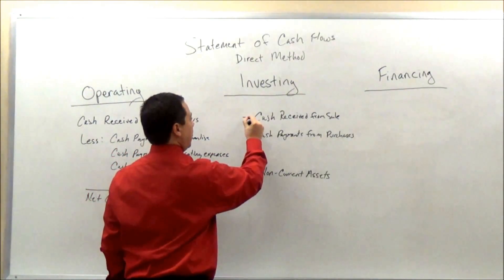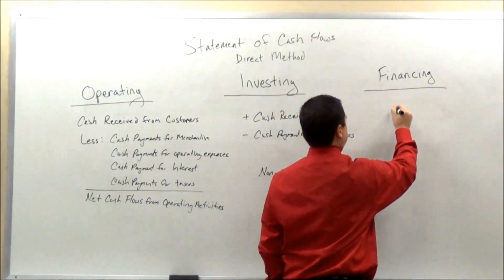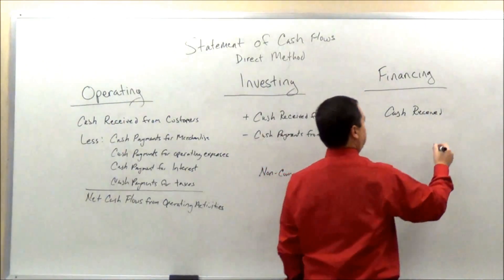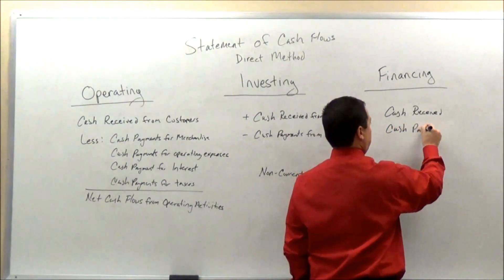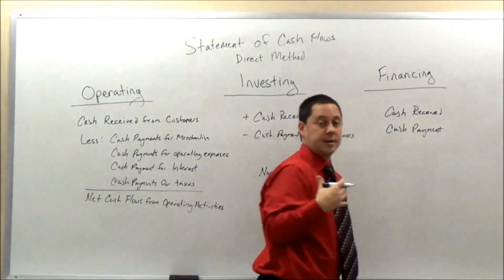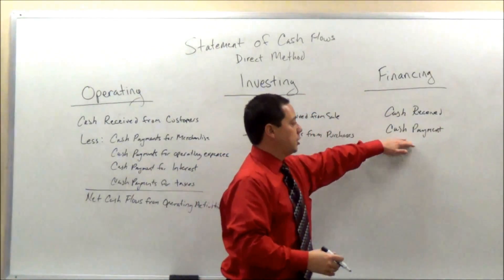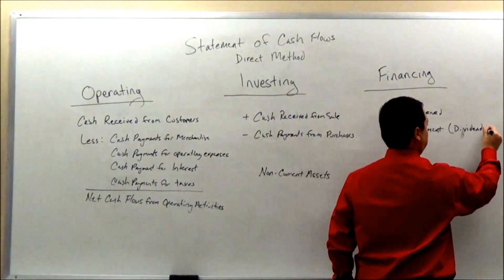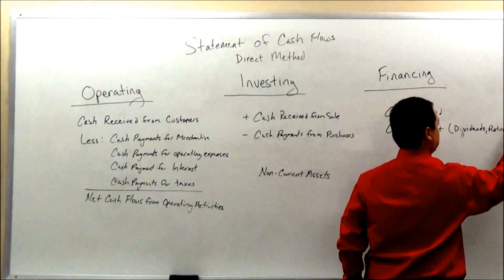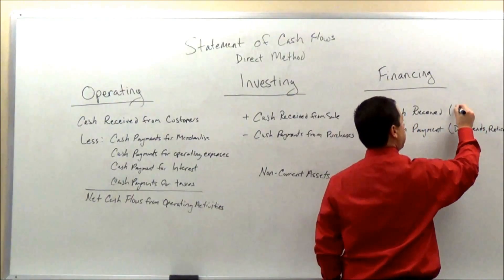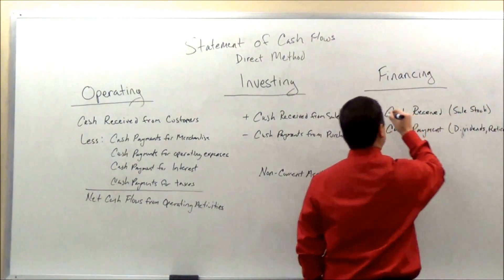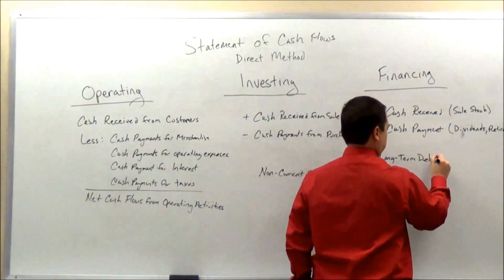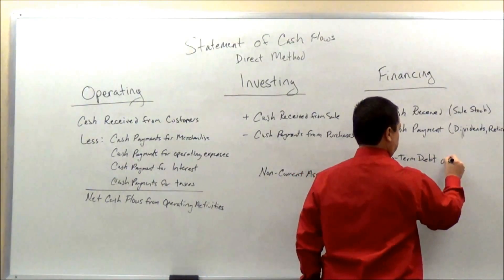We'll just add and subtract those. Now here in the financing section, it's similar. Cash received could be from the issuance of a bond or something like that, or cash payment, which could be for the purchase or repayment of a bond — so we're retiring that bond. But this could also be from dividends or from the sale of stock. This section primarily focuses on long-term debt and stockholders' equity.